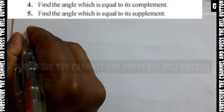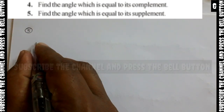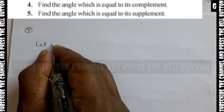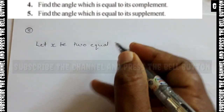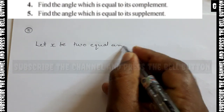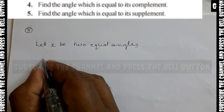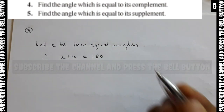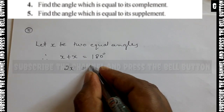Question 5: Find the angle which is equal to its supplement. Questions 4 and 5 are similar, but here we use supplement instead of complement. Let x be the two equal angles. Therefore x plus x is equal to 180 degrees, since supplementary angles sum to 180 degrees. So 2x equals 180.